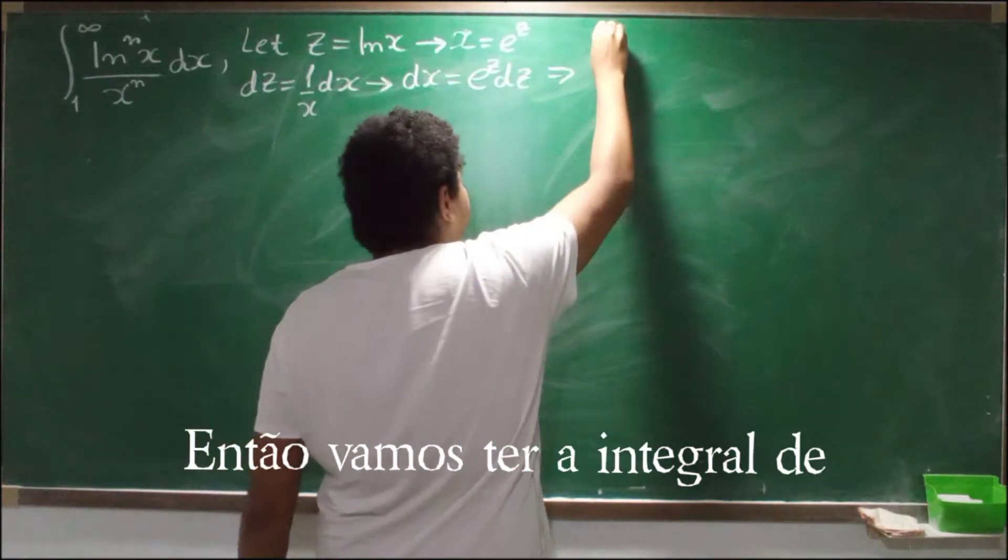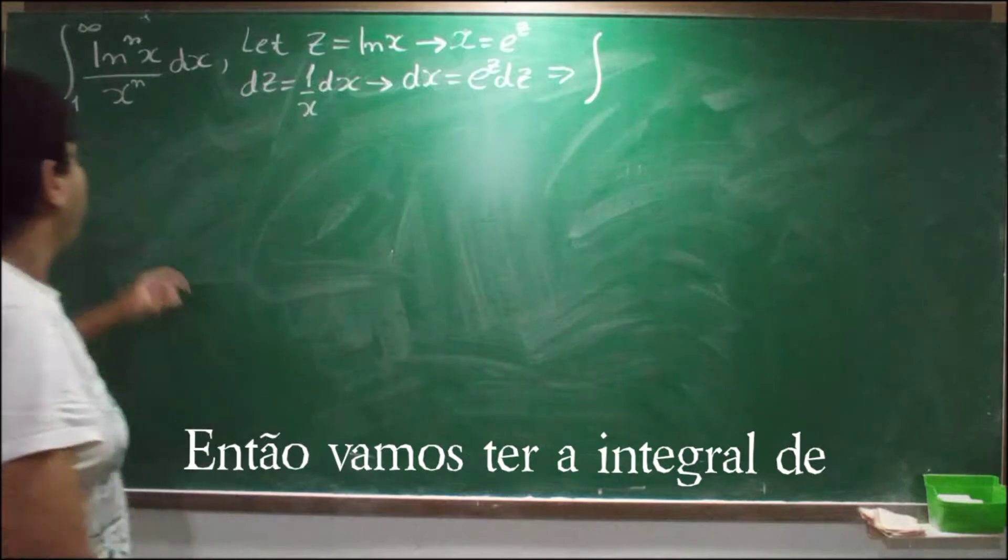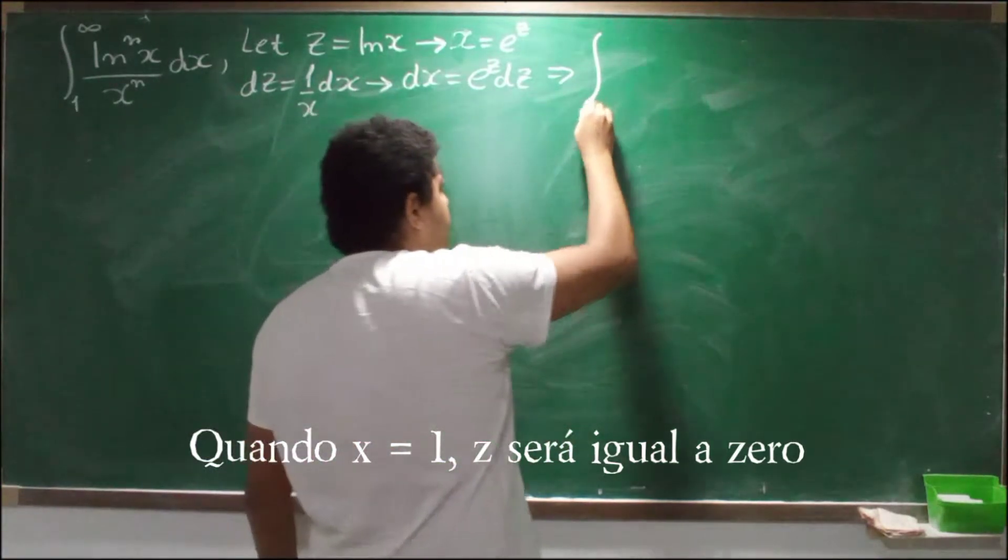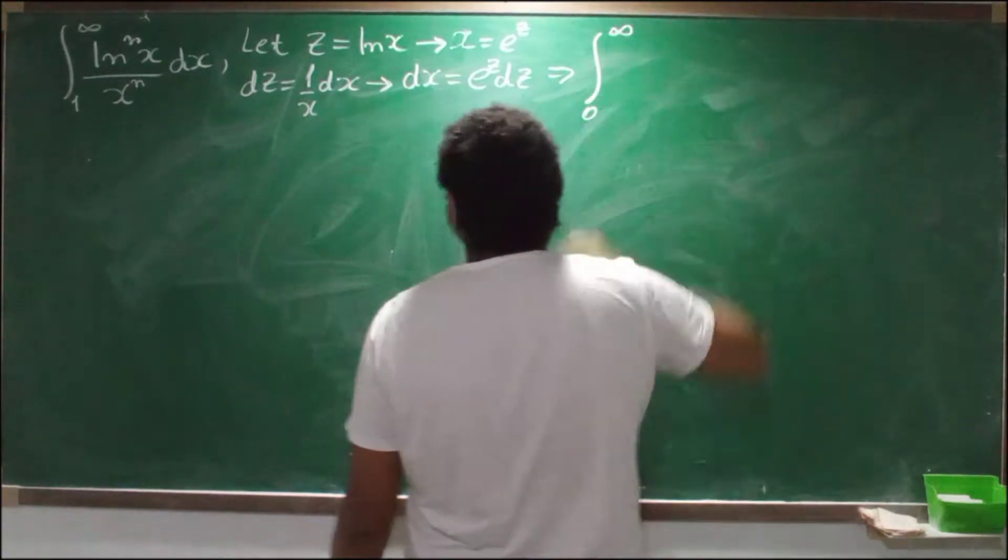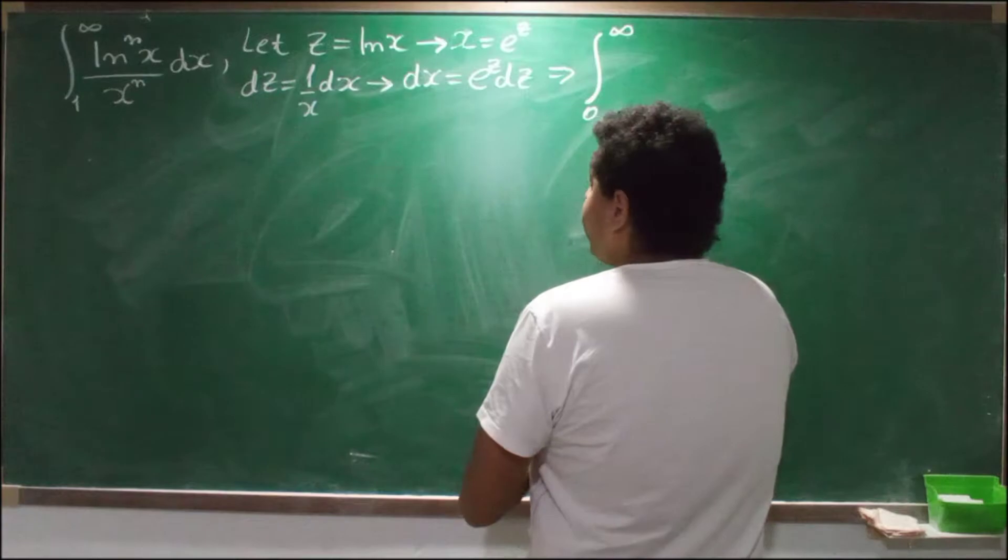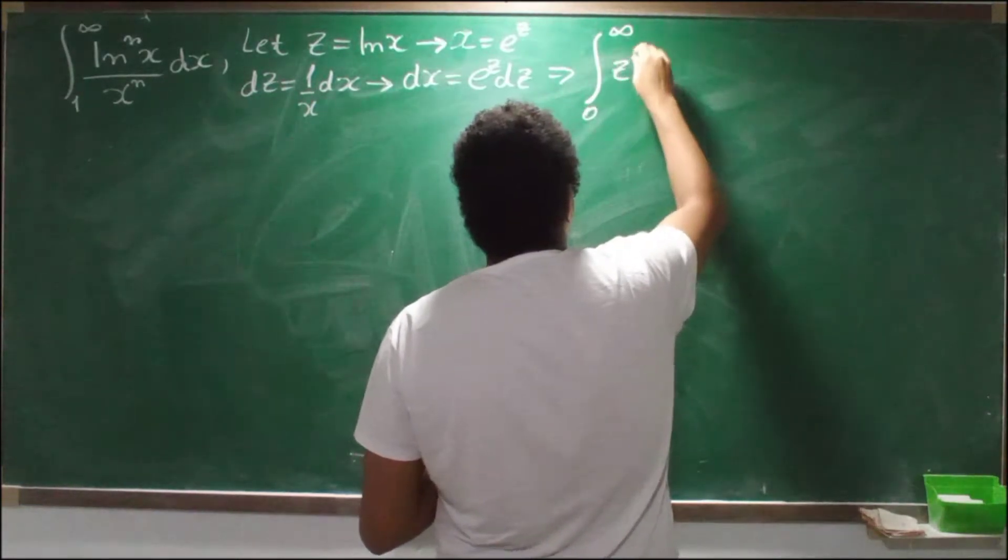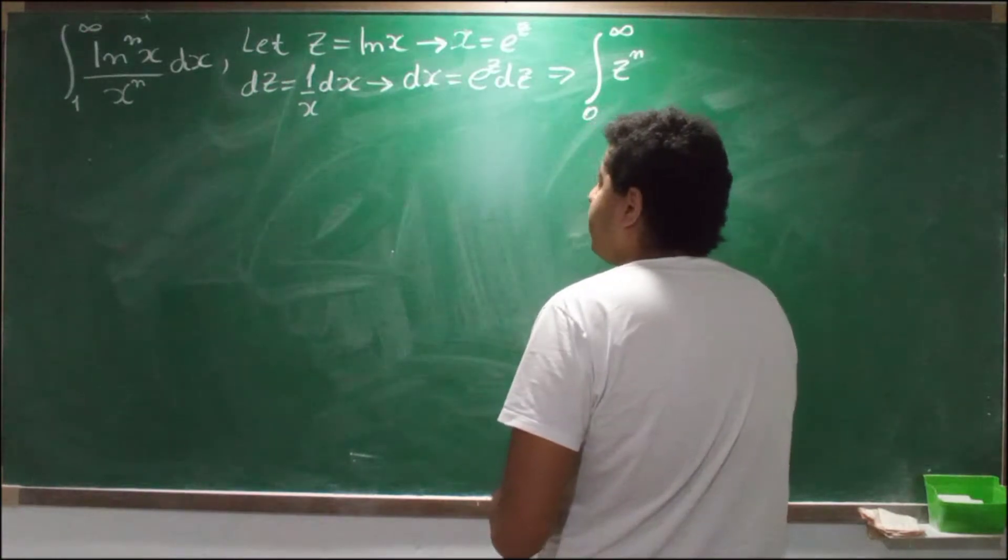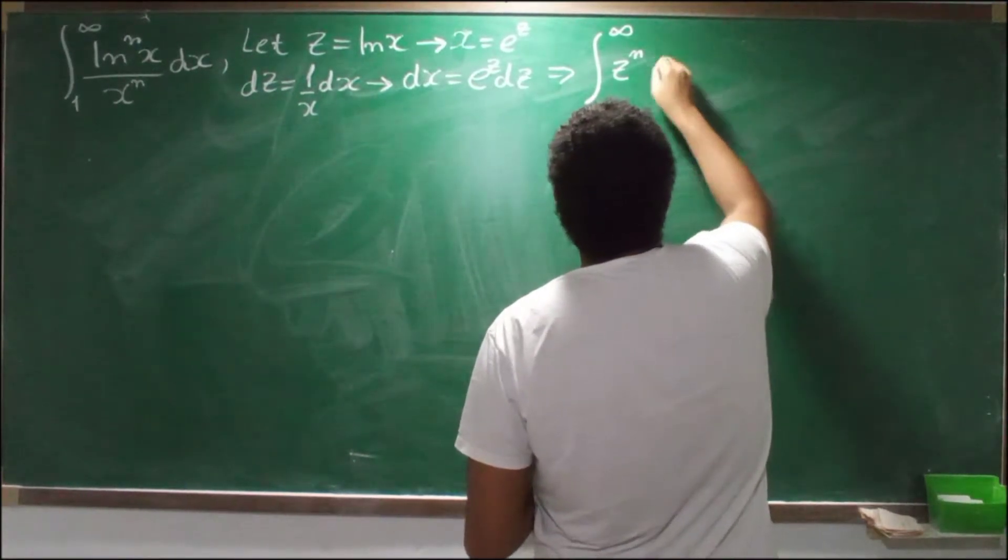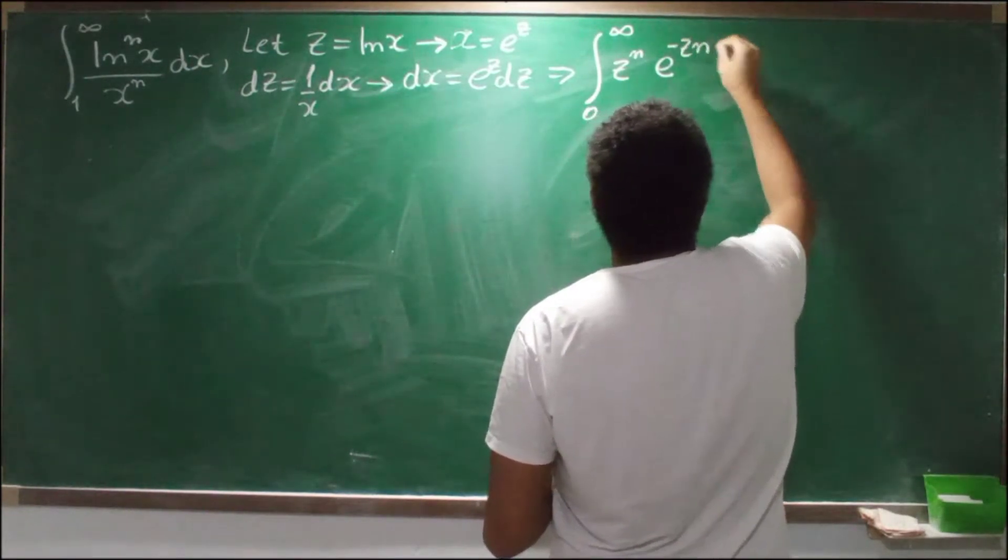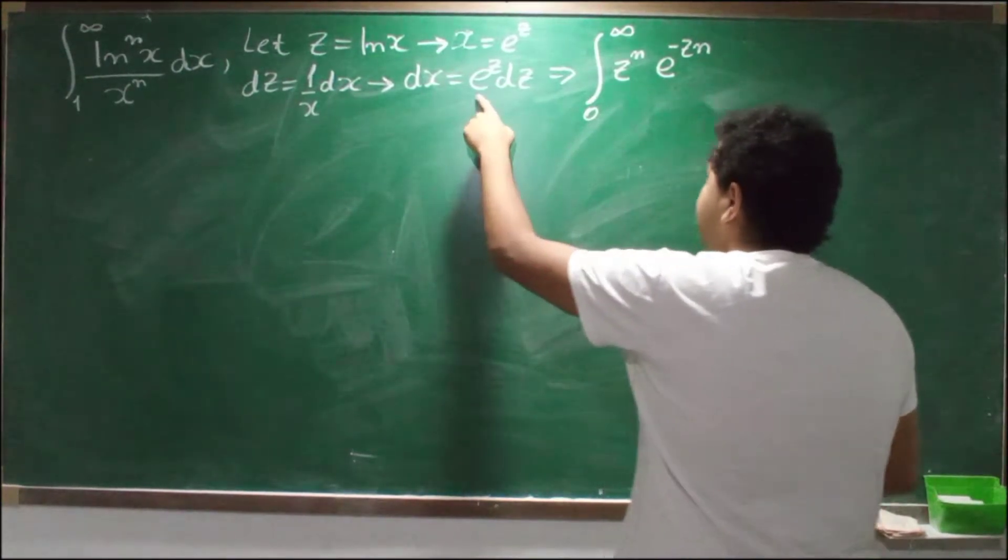So we're gonna have the integral from when x is equal to 1, z will be 0, to infinity. We have ln of x to the power n, so we have z to the power n, over x to the power n, so we're gonna have e to minus z times n.